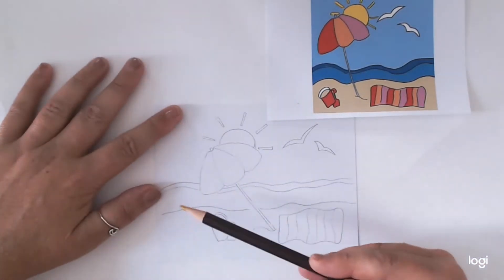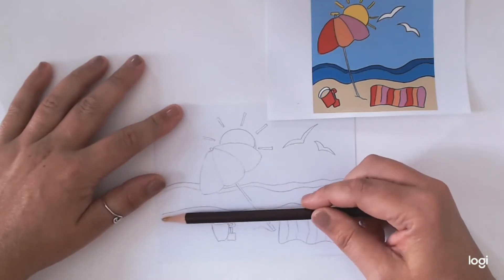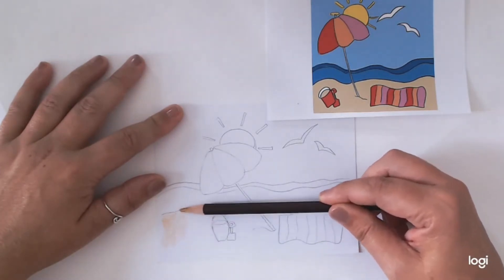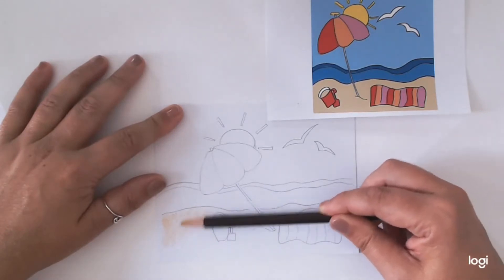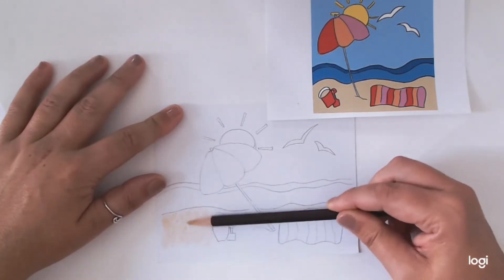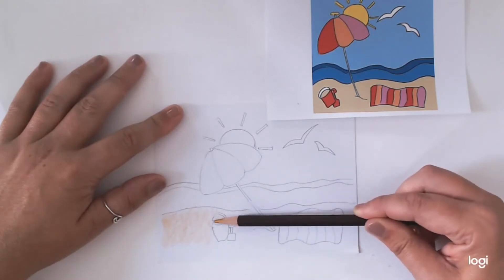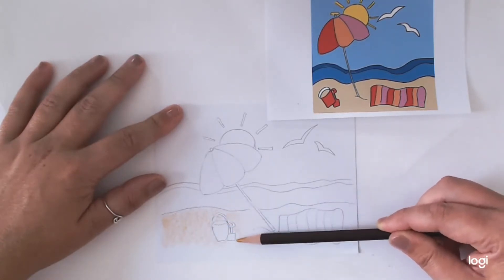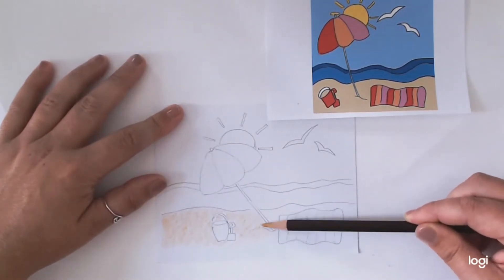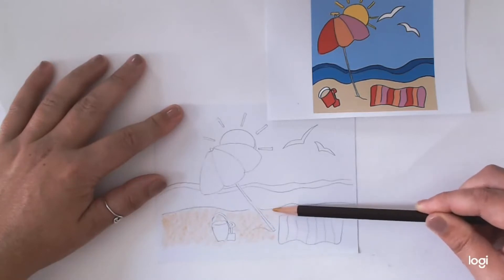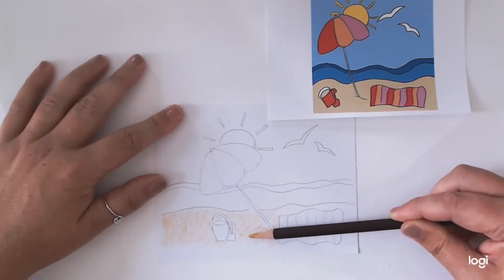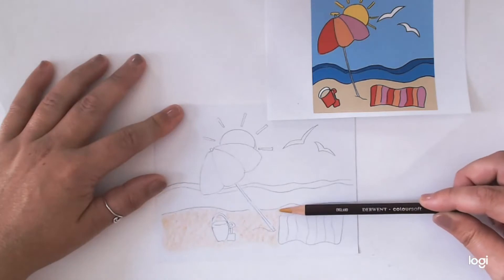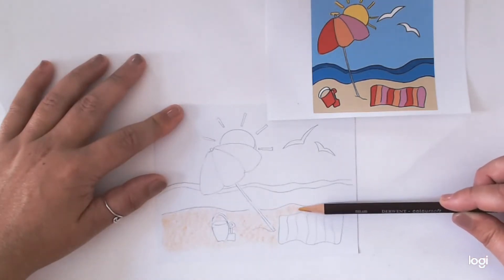I'm going to start with the sand. Now, I'm going to hold a pencil quite far away and use the side of my pencil, because what we're wanting to do is just to fill that area in as best we can as quickly as we can with as much of the pigment off the pencil as we can. Now, I keep turning it because that means you don't end up with that flat edge and you don't waste your pencil. Keep turning, keep turning and that will save your pencil.